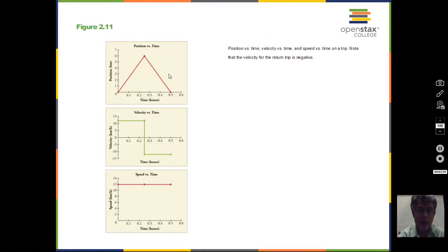Then the book has some graphs here showing position versus time on this particular graph. Down here, velocity versus time, and down here, speed versus time. So why is it that the velocity becomes negative? Why does the velocity become negative?